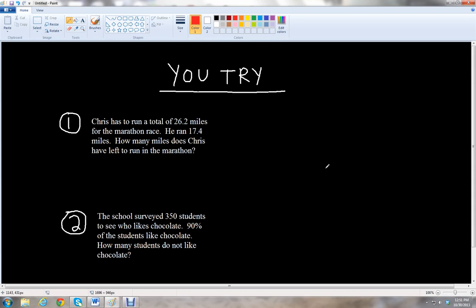Okay, so let's go over the answers. The first problem says that Chris has to run a total of 26.2 miles for the marathon race. So, Chris, he ran 17.4 miles so far. How many miles does Chris have to run in the marathon? So, we know that he has a total of 26.2 miles. And we know that 17.4, he has run so far. So, 17.4, and we have to add, plus, unknown number. We can use D for distance. And then that's going to equal the total amount of miles. So, 26.2 miles.